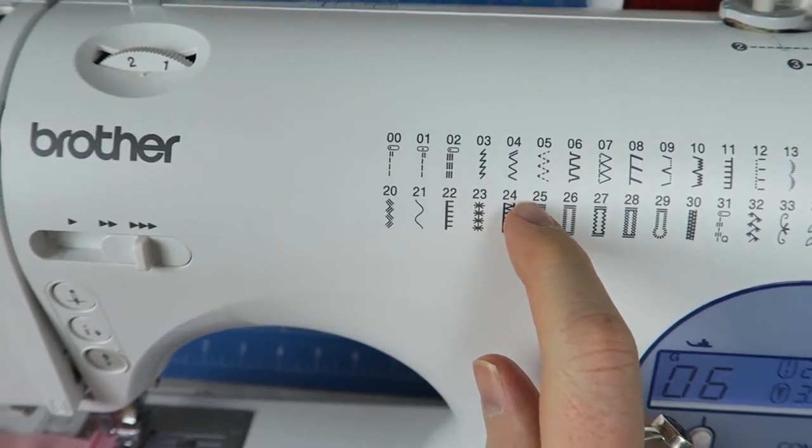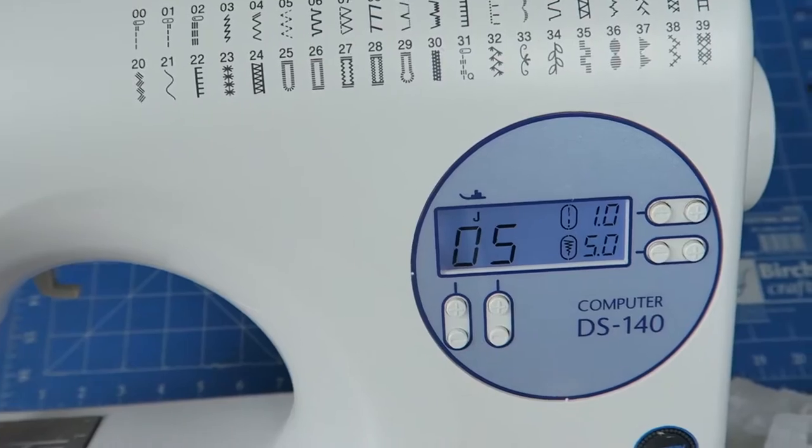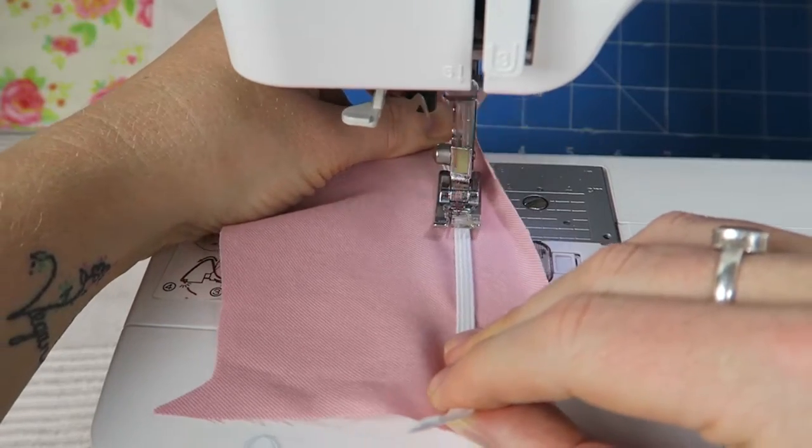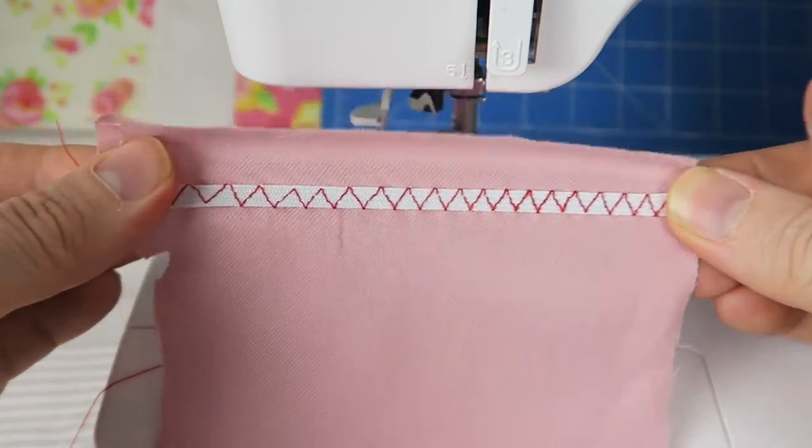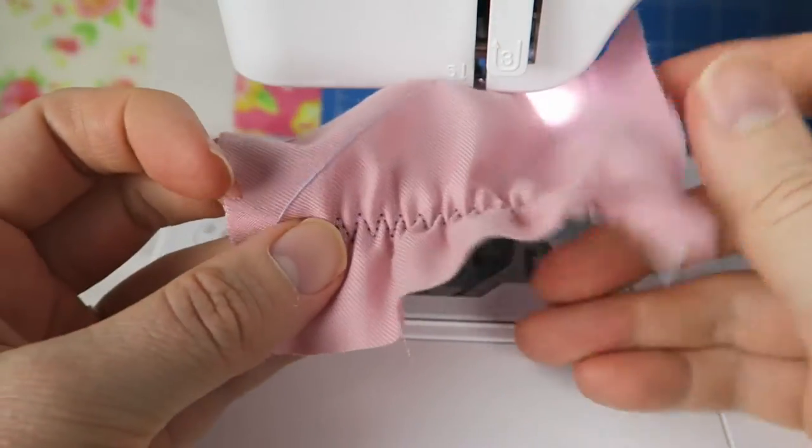Next we're going to have a look at the three-point zigzag stitch, which is really good for sewing on elastics and also really good for overcasting. A really great stitch to use, especially on stretch fabrics.